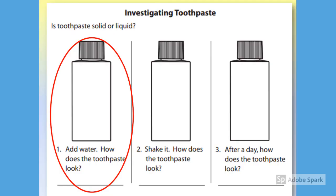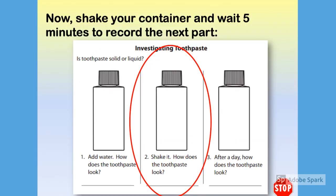You will need a bottle with a lid. First, you're going to add water and a little squirt of toothpaste — not too much. How does the toothpaste look when it enters the water? After you've written down your observation, shake your container and wait five minutes to record the next part.